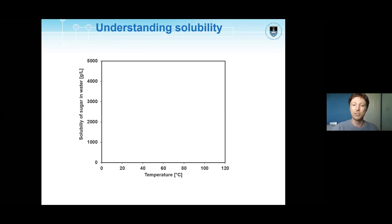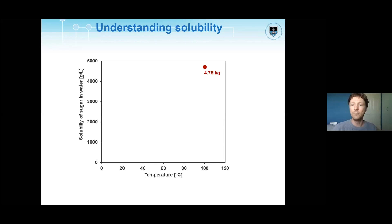If we take a simple example of sugar dissolving in water — think of sugar dissolving in your coffee in the morning — we know all the sugar would dissolve. For a full jar of sugar, all of it would dissolve at 100°C; you would need 4.75 kg of sugar before no more would dissolve. At 25°C you would need just 2.2 kg, and across a full range of temperatures you get the solubility curve.